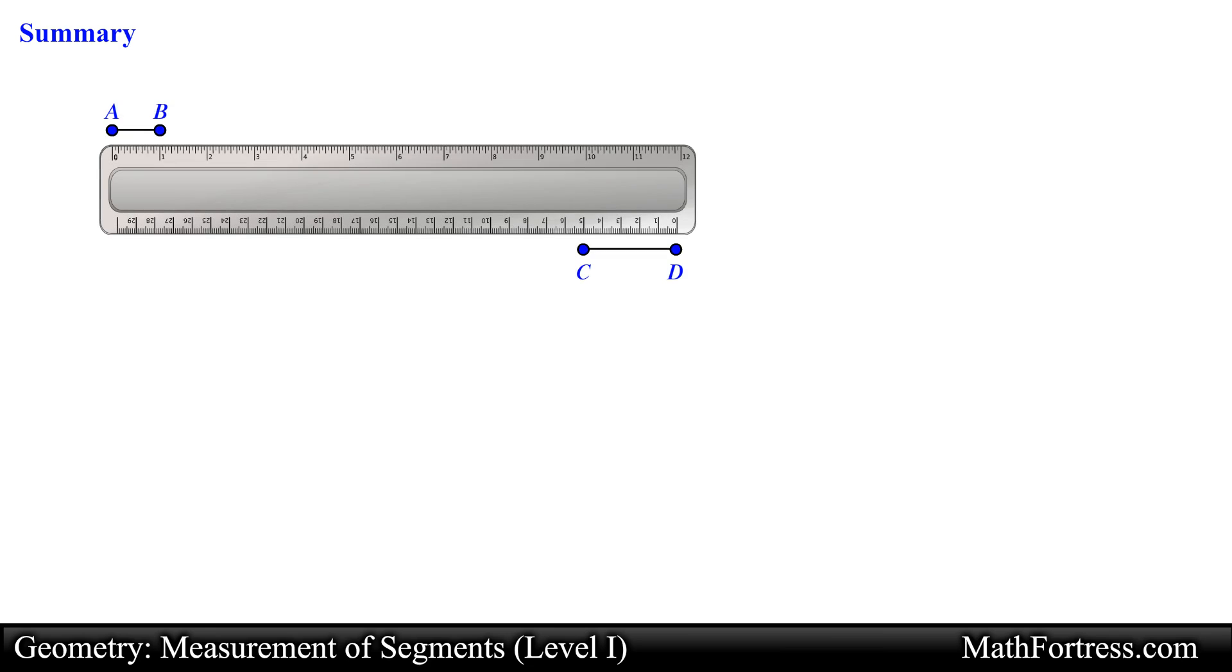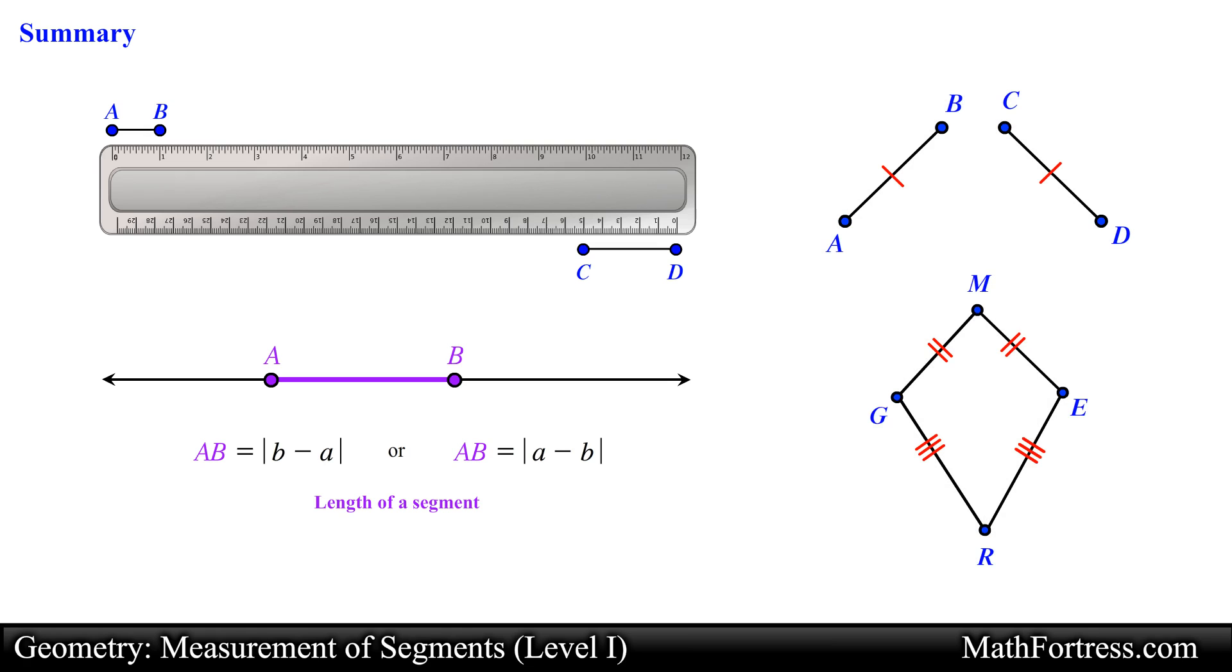Alright, and this is the basics of measuring line segments. We can find the length of a line segment by using a ruler with an appropriate unit, or we can use a number line and find the absolute difference of the segment's endpoint coordinates. We can also identify and label congruent segments by using tick marks in a diagram or by using the congruent symbol, which tells us that two line segments have the same length. In our next video, we will go over simple examples that make use of the concepts learned so far.